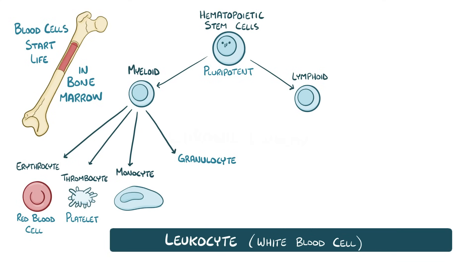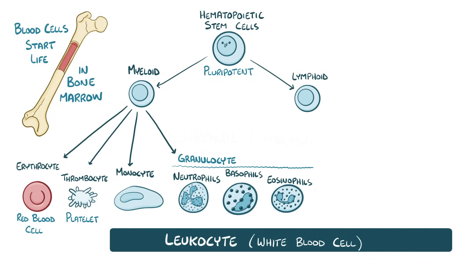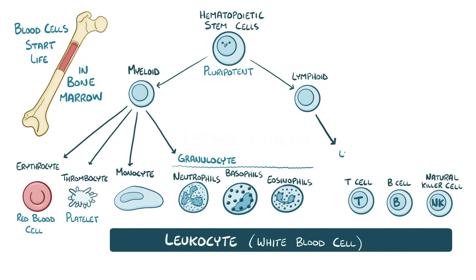Granulocytes are cells with tiny granules inside them, and they include neutrophils, basophils, and eosinophils. If a hematopoietic stem cell develops into a lymphoid cell on the other hand, it'll mature into some other kind of leukocyte, like a T cell, a B cell, or a natural killer cell, which are referred to as lymphocytes. Once the various blood cells form, they leave the bone marrow and travel around in the blood or settle down in tissues and organs like the lymph nodes and spleen.